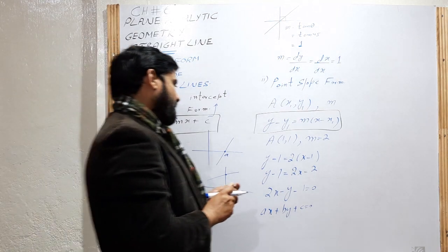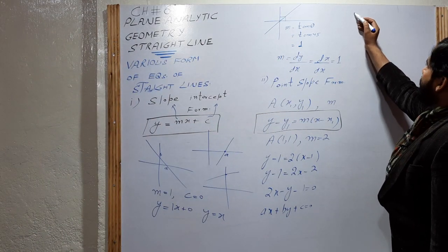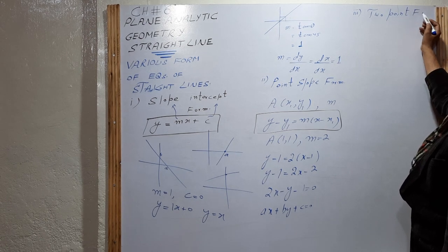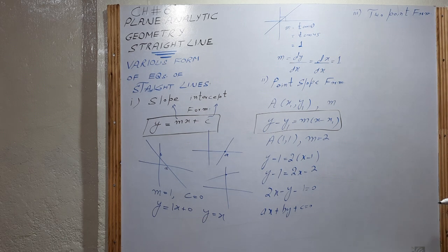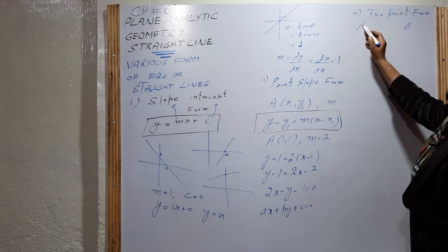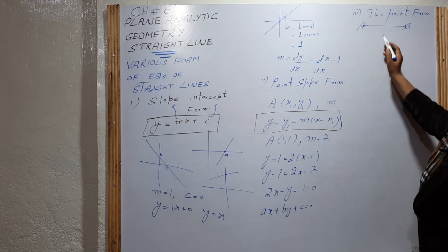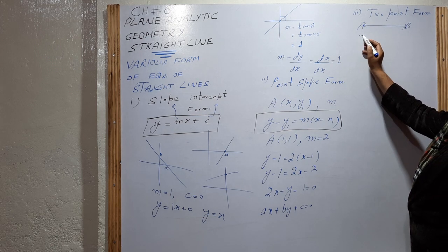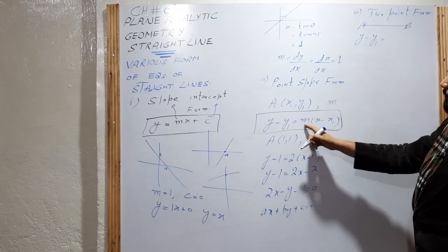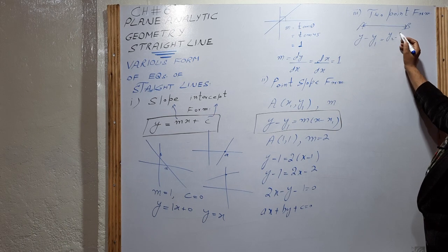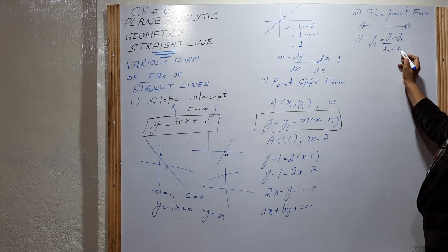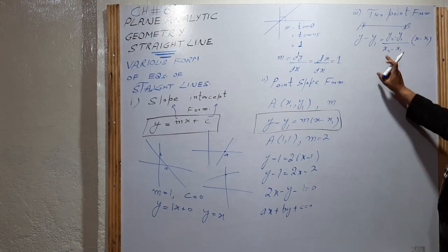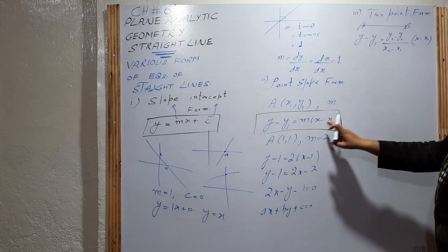The third formula is the two-point form. Two points determine a line. If there are two points A and B, the formula is: y − y1 = [(y2 − y1)/(x2 − x1)] × (x − x1). For example, given points (1, 1) and (0, 0): y − 1 = [(0 − 1)/(0 − 1)](x − 1) = 1·(x − 1), which simplifies to y = x — the identity function passing through the origin.